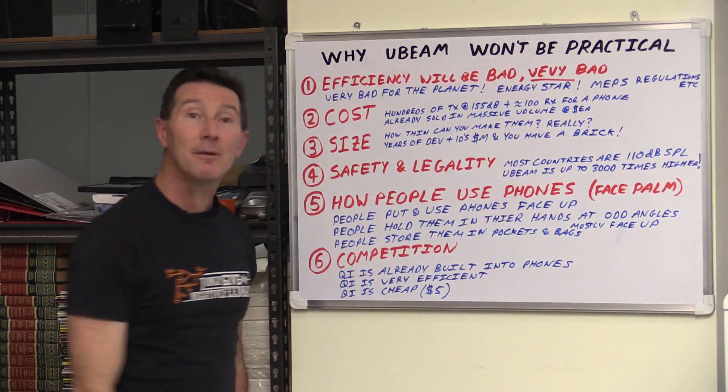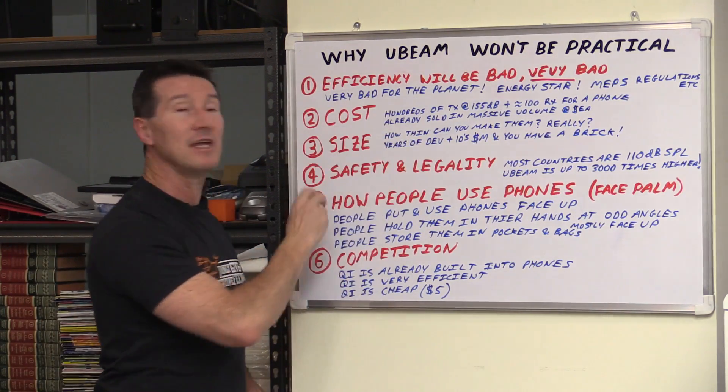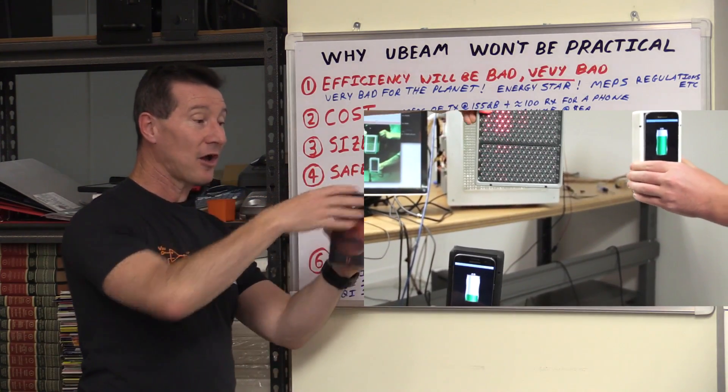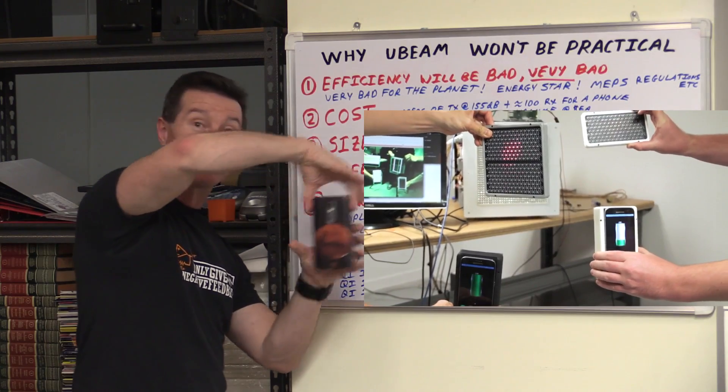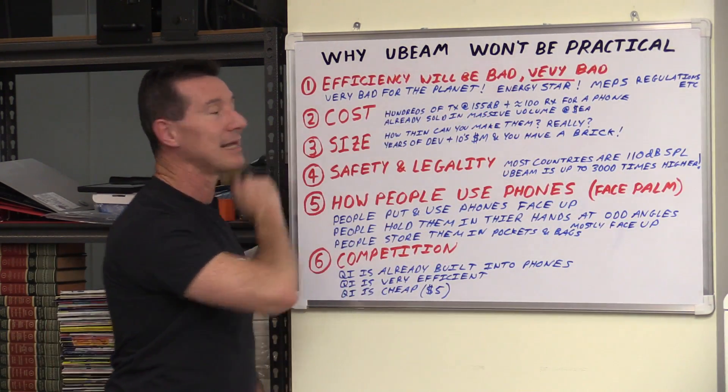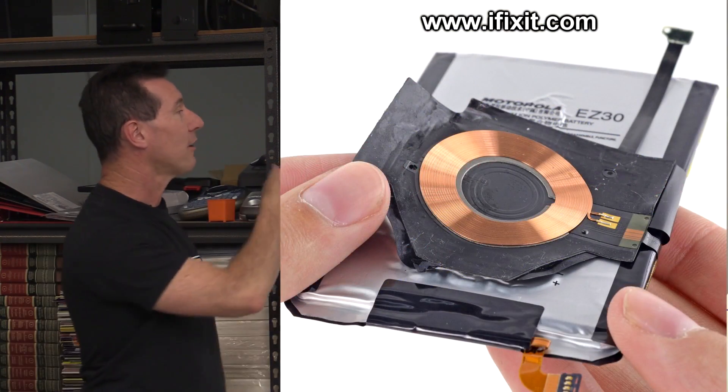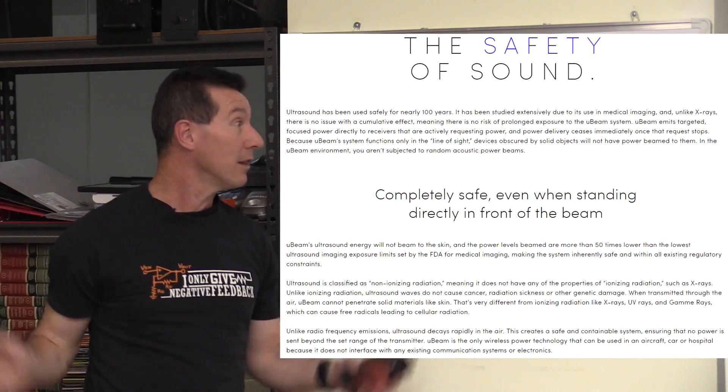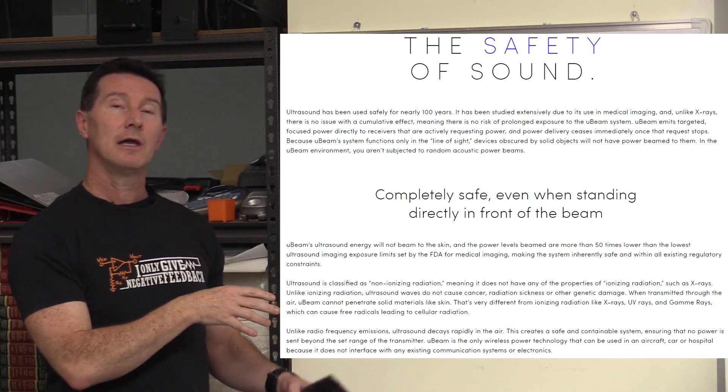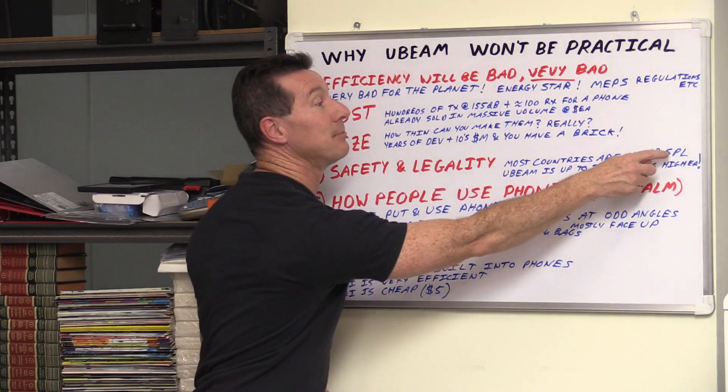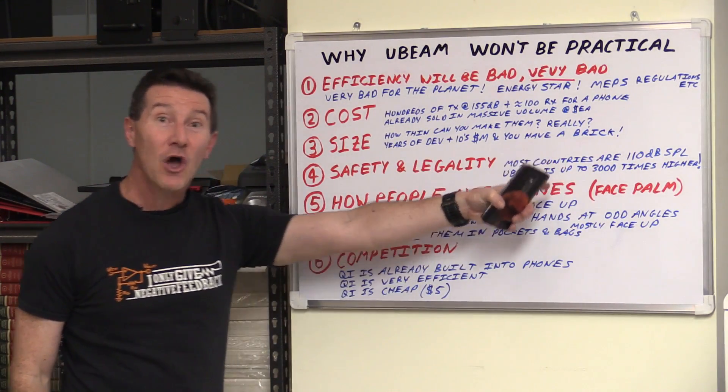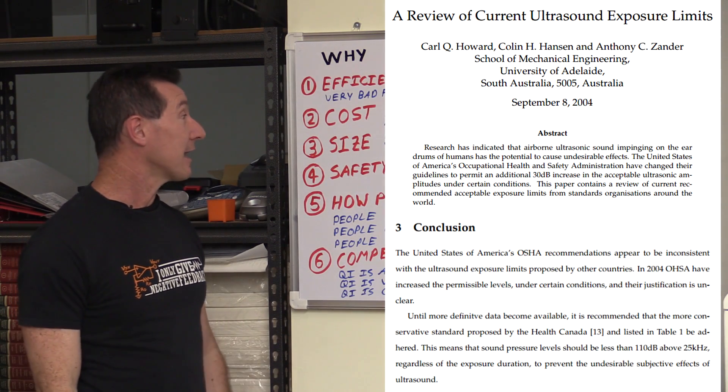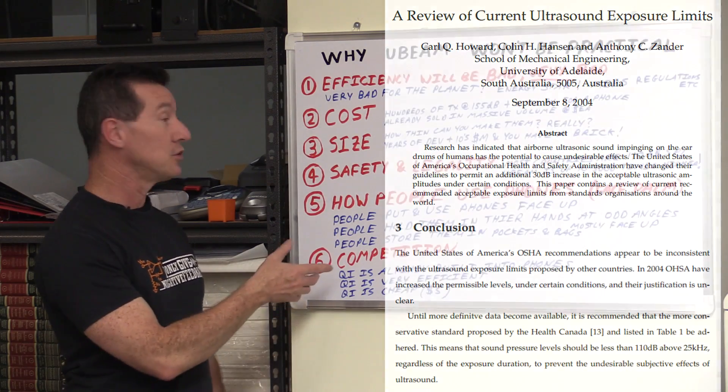Size. How thin can you make these things? Really? You can't. Look at their design. They've spent five years on this. Tens of millions of dollars in development. And they've got a brick, an actual big brick which you have to hold in a certain direction. It's got to be flat on to the thing. Nobody's going to want that. There's no way it's ever going to get thin enough, thinner than a Qi charger. Safety and legality. Most countries have either legislation or recommended safe levels of 110 dB SPL. So uBeam is up to 3,000 times higher than what almost every country recommends as a safe limit for ultrasonics. It's ridiculous.